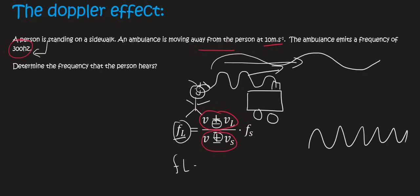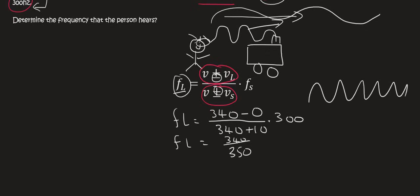The frequency of the listener equals 340 minus the velocity of the listener, which is 0, over 340 plus the velocity of the ambulance, which is 10, times the frequency of the source, which is 300. That gives us 340 over 350 times 300, which equals 291.43 hertz.